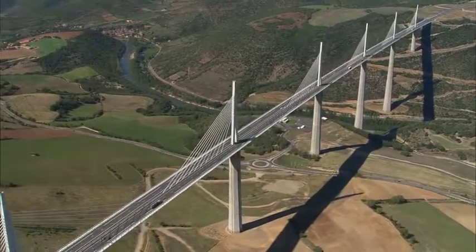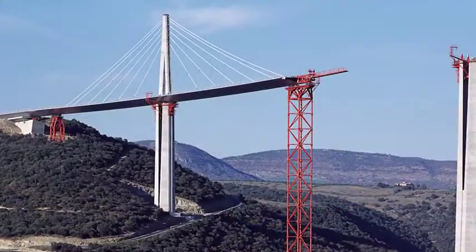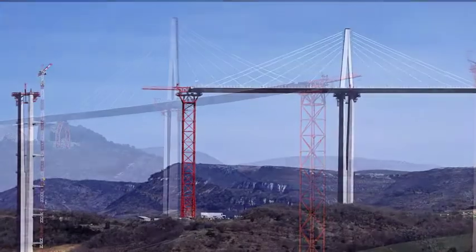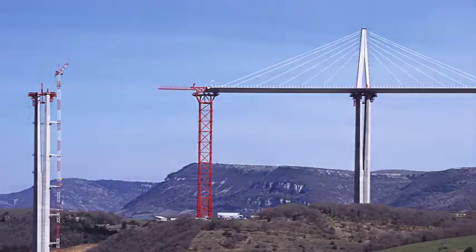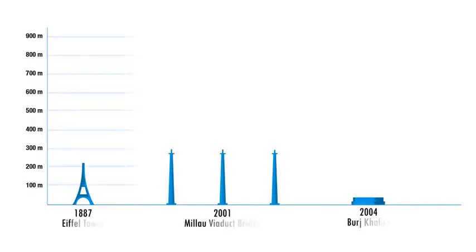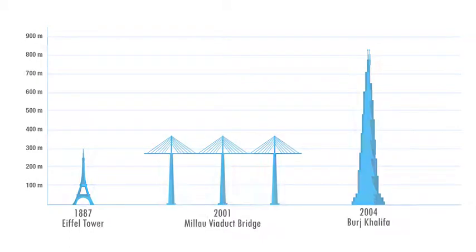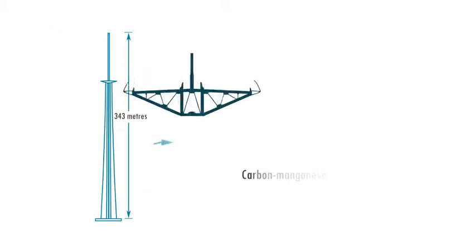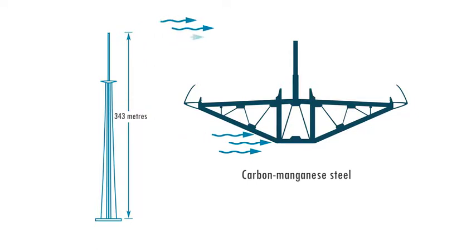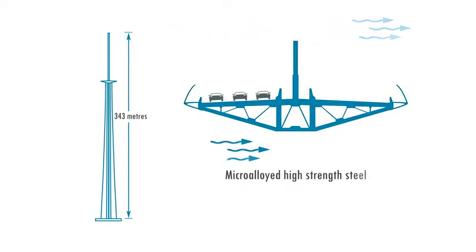The Millau Viaduct in France is a good example of high-strength steels which enabled the design and construction of the world's tallest bridge. A niobium-bearing high-strength steel was used to construct the deck of this box girder bridge. Allowing the use of high-strength steels not only led to a reduction in weight, but also allowed the height of the deck structure to be reduced, minimizing the effect of high winds to which this tall structure was exposed.